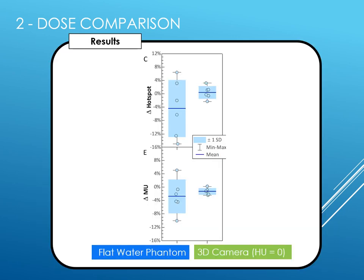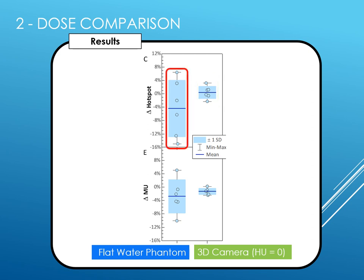When comparing the monitor units needed to achieve clinical coverage, our 3D camera-based calculations were on average within 1.3% when compared to calculations based on the CT scan, and generally hotspots were modeled very well. In contrast, using a flat phantom for calculations greatly underestimated hotspots with a mean difference of 4.5% and a large standard deviation. Likewise, the monitor unit differences needed to achieve clinical coverage were also much greater and with a larger standard deviation.